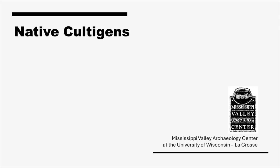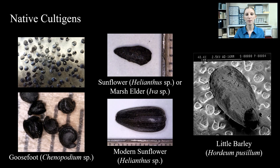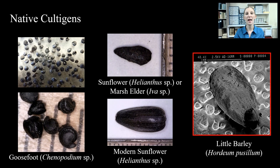We also find cultigens like goosefoot. Goosefoot seeds puff up and pop open with heat or burning, which can help us recognize archaeological goosefoot compared to fresher seeds that are dark but not puffed. Other examples include sunflower — with an archaeological sunflower or marsh elder seed from a La Crosse County site and a modern example — and little barley. These plants were not domesticated like corn, beans, and squash, but people would have nurtured their growth for better harvests.